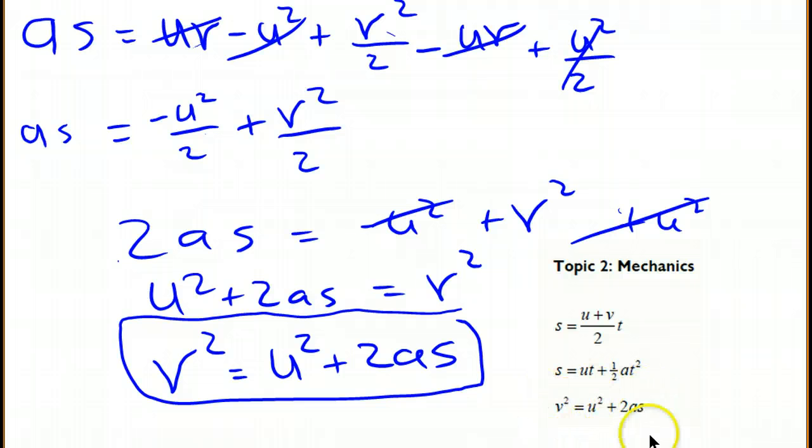Or we can, without time, find the final velocity squared is equal to the initial velocity squared plus 2 times the acceleration rate times the distance that we move.